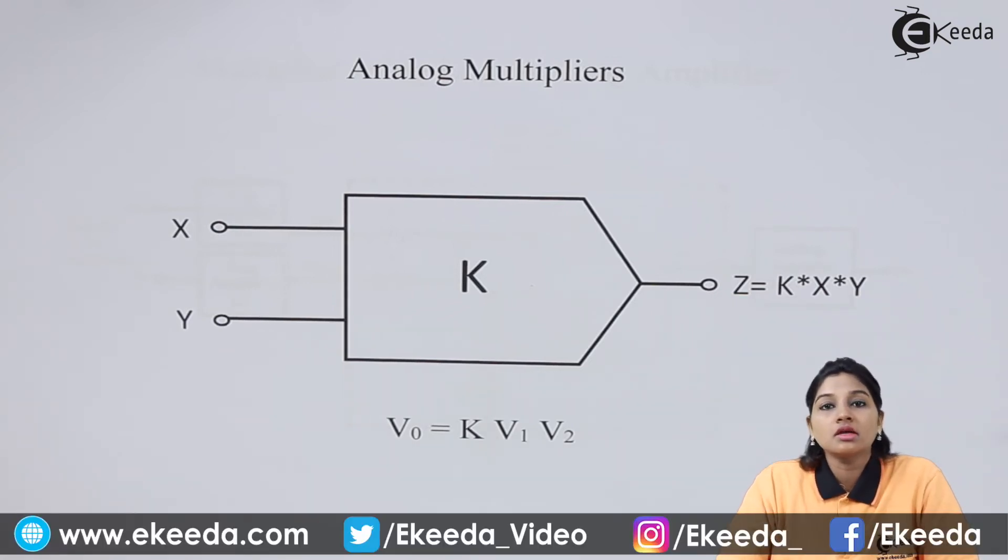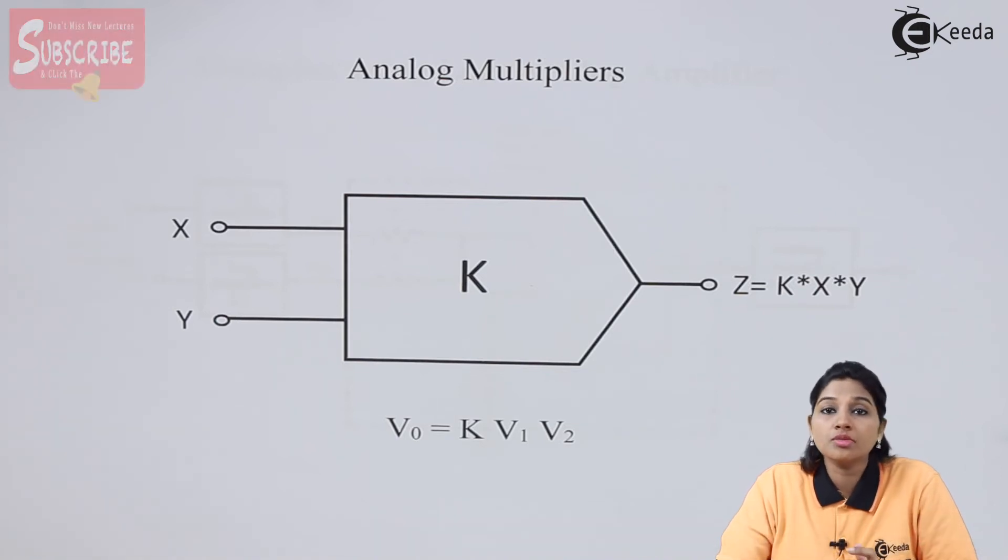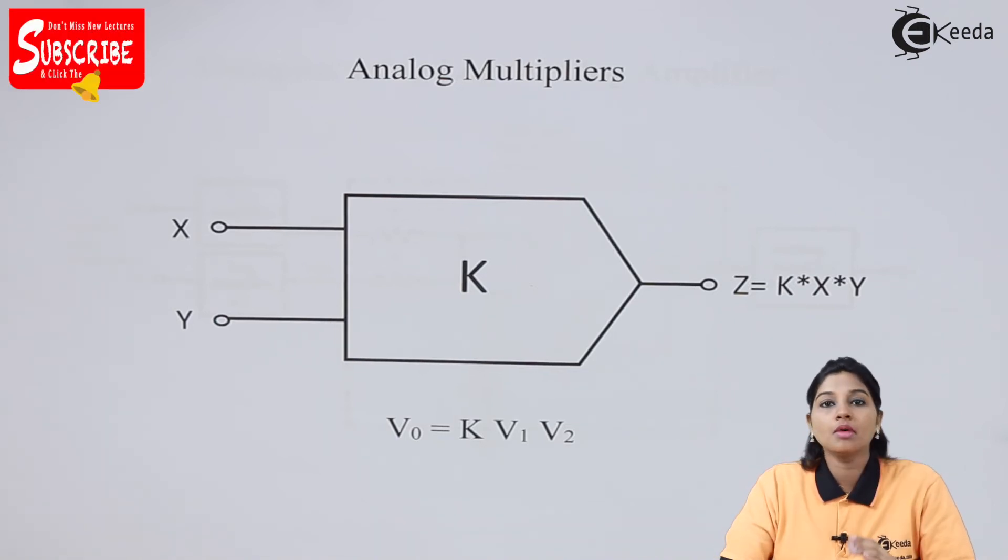The Analog Multipliers can be implemented by using various techniques. Some of the techniques are by using Log-Antilog Amplifier, by using Variable Transconductance Amplifier, by using Quarter Square Multipliers, and many more.